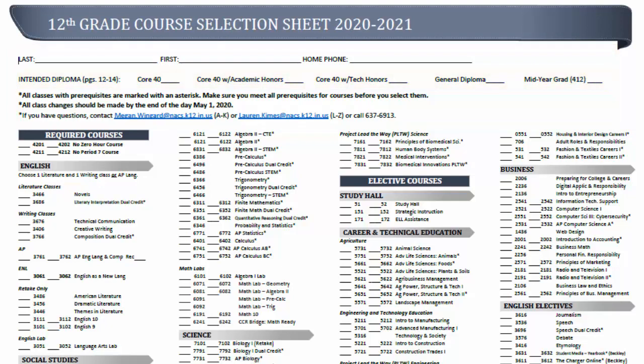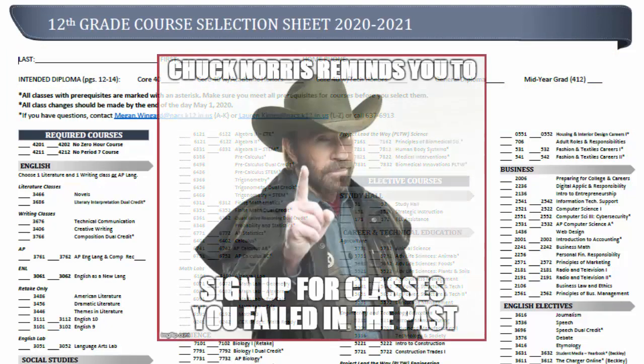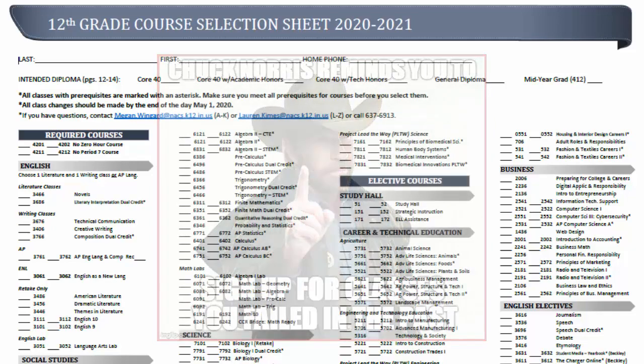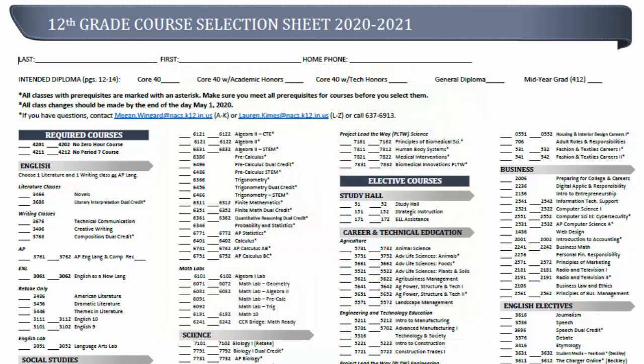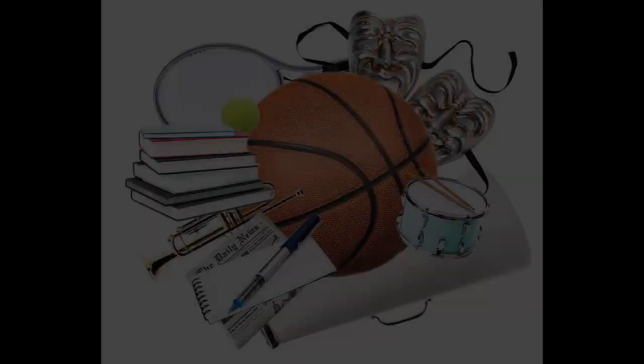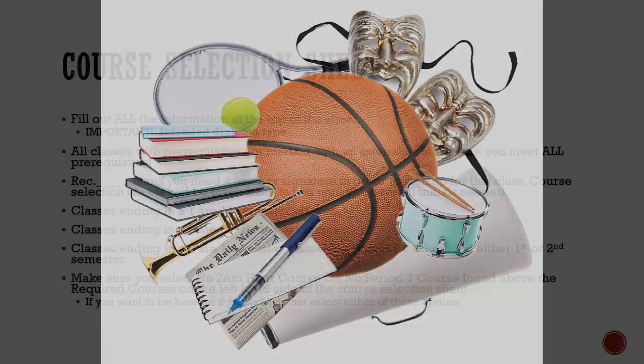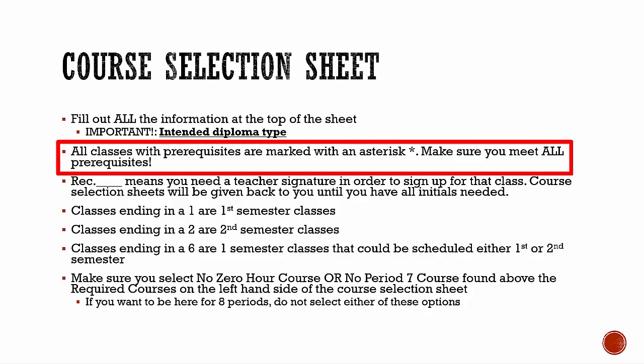As you choose your classes for your senior year, you need to make sure you are retaking any failed courses first, then make sure you have your required courses, and then you can choose electives. When you make your course selections, you will have a total of 16 checkmarks. Study halls can be chosen as all year or just one semester — consider extracurricular activities when picking a study hall. All prerequisites are marked with an asterisk, so make sure you meet all prerequisites.